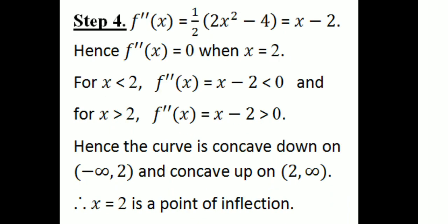Step 4: f''(x) = (1/2)(2x − 4) = x − 2. Hence f''(x) = 0 when x = 2. For x less than 2, f''(x) is negative; for x greater than 2, f''(x) is positive. Hence the curve is concave down on (−∞, 2) and concave up on (2, ∞). The second derivative test is used — for values where the second derivative is negative the curve is concave down, and for positive values it is concave up.